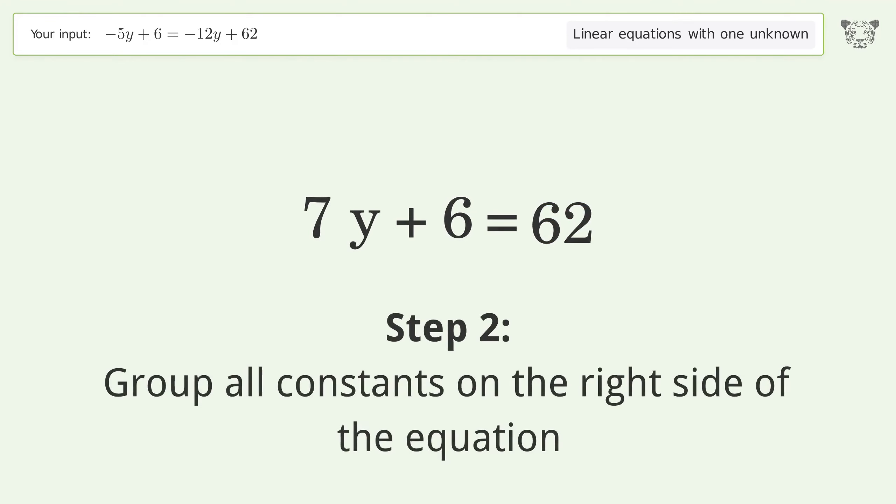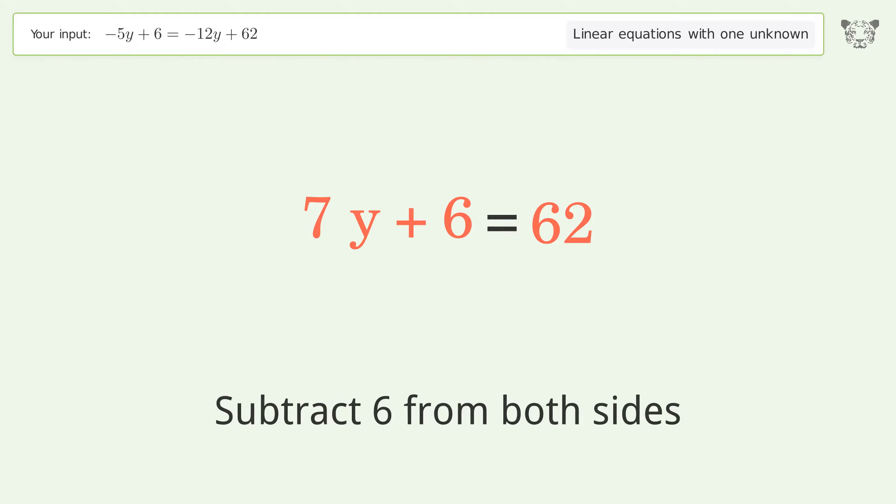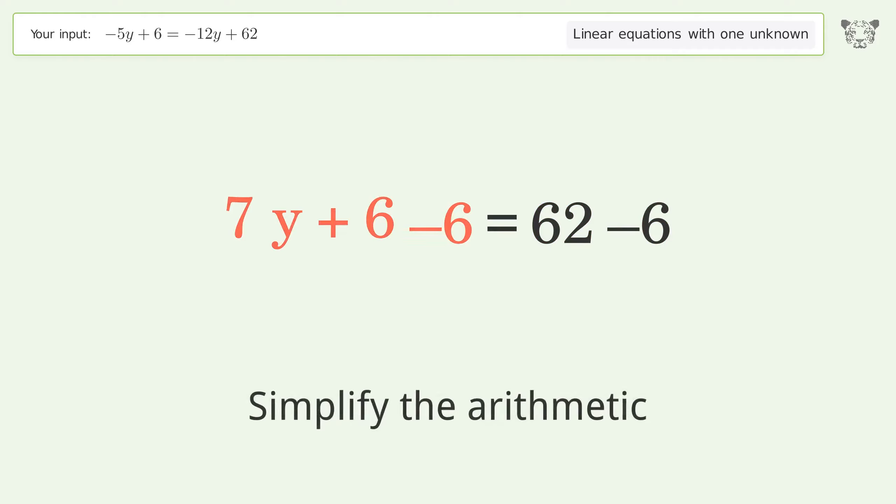Group all constants on the right side of the equation. Subtract 6 from both sides. Simplify the arithmetic.